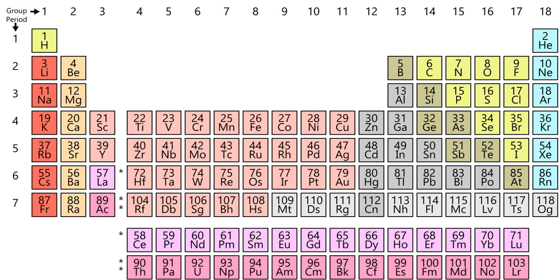Hydrogen is the most abundant of the chemical elements, constituting roughly 75% of the universe's elemental mass. Ionized hydrogen is just a proton. Stars in the main sequence are mainly composed of hydrogen in its plasma state. Elemental hydrogen is relatively rare on Earth, and is industrially produced from hydrocarbons such as methane. Hydrogen can form compounds with most elements and is present in water and most organic compounds.